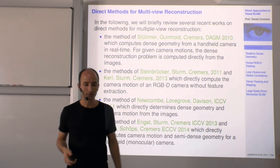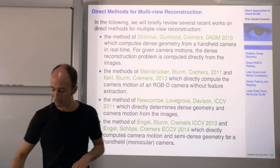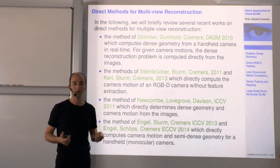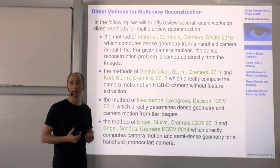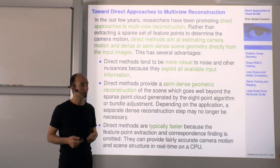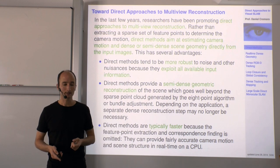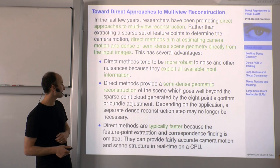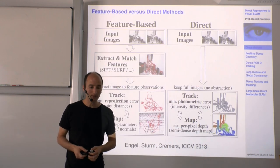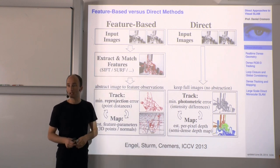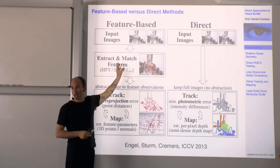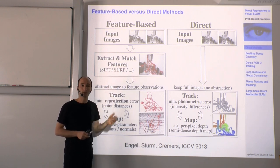Welcome to the next lecture on multiple view geometry. In the last chapter we started on direct methods for SLAM — simultaneous localization and mapping — for the reconstruction problem of tracking the camera and estimating the geometry. The advantages of direct methods are that they tend to be more robust to noise, give better reconstructions in many cases, and are often faster. They avoid the intermediate step of feature extraction and feature matching used in classical approaches like the eight-point algorithm and bundle adjustment.